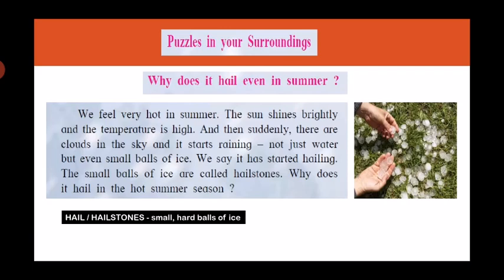Summer means the hot season. And hail means hailstones, which means small hard balls of ice. Can you see in the picture? Those are hail or hailstones — they are nothing but balls of ice. Just like we get rain, sometimes along with the rain we get these hailstones falling. So the question is: why does it hail even in summer?